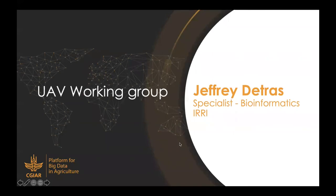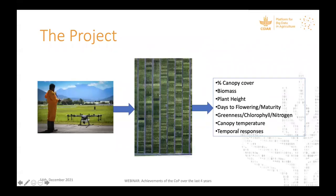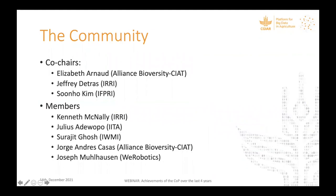I am Geoffrey Detlas, a bioinformatics specialist from the International Rice Research Institute. I will share what has been done for the UAV working group. Precision agriculture and digital farming employ UAV technologies. High throughput phenotyping using unmanned aerial vehicles like drones is a reliable, faster, and cheaper way to collect phenotype data from the field than manual data curation. Data gathering, processing, and analysis of UAV-generated data requires proper data management and curation. To be FAIR-compatible, data standards need to be defined, and with the help of data standards and ontologies, UAV-generated data will be FAIR.